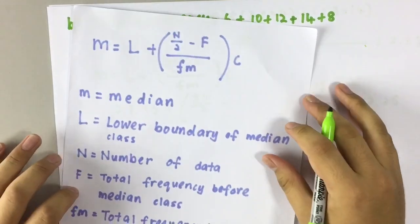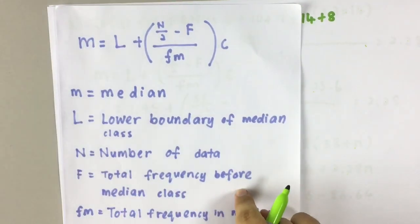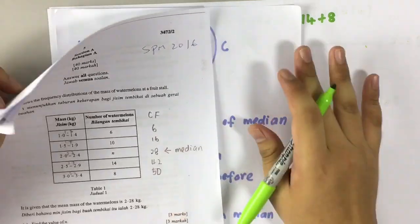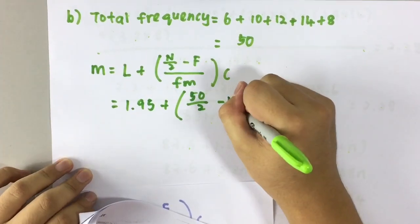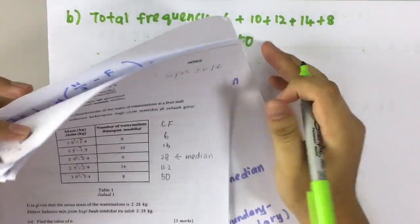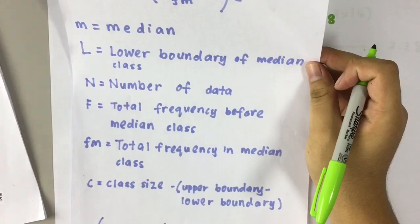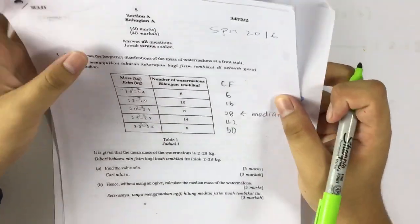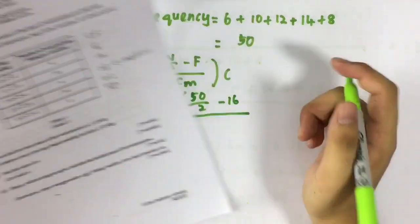Plus n, number of data which means total frequency, so 50 divided by 2. Minus f, what is f? Total frequency before, before median class. Divided by fm. What is fm? Total frequency in median class is the value we found just now, n. So divided by 12.